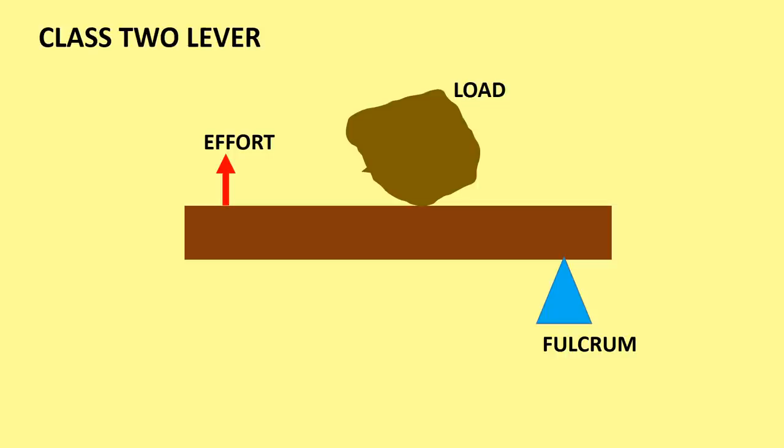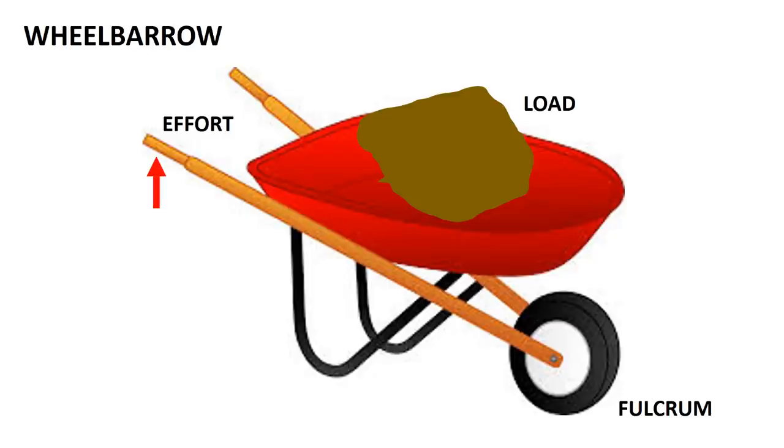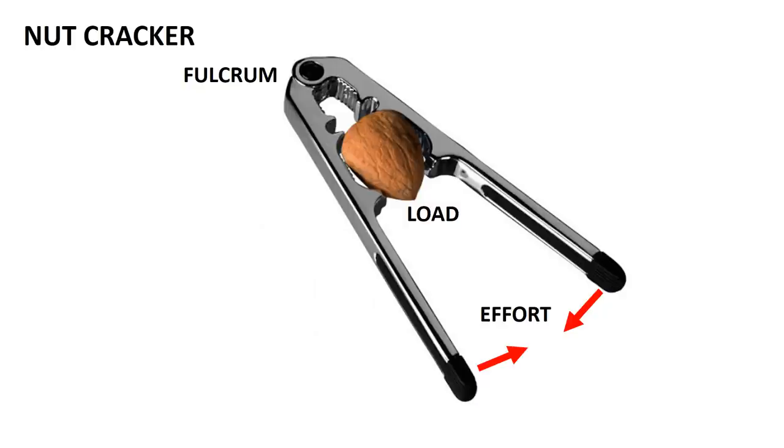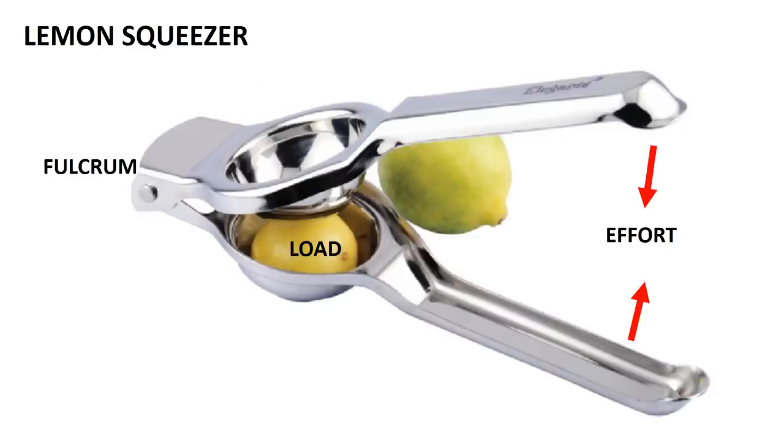Class 2 lever: In this class, the load is between the effort and the fulcrum. The mechanical advantage is more if the load is closer to the fulcrum. Examples of class 2 levers are wheelbarrows, nutcracker, and lemon squeezer.